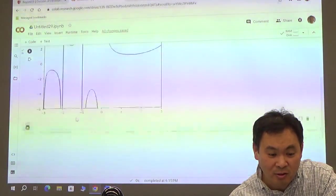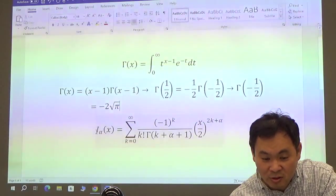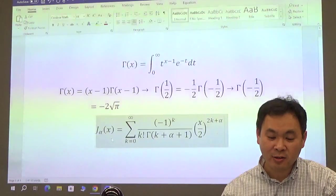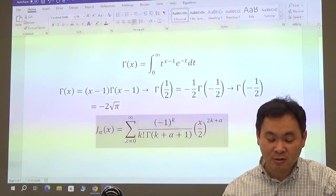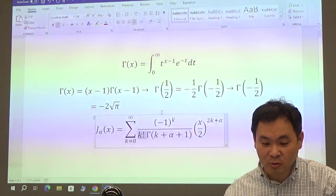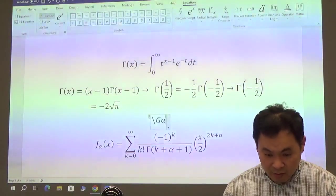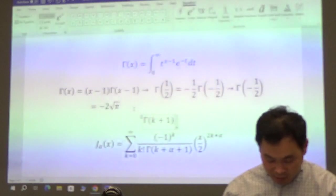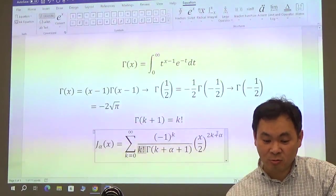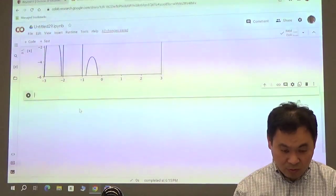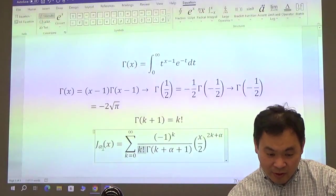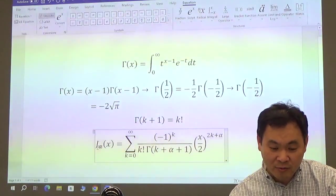So once we have some idea of how gamma function looks like, let's now draw the graph of the Bessel function. This is the Bessel function of the first kind. Let's only draw a Bessel function of the first kind. The thing is, Python doesn't have factorials, but because we know that gamma of k+1 equals k factorial, something that we proved last time, I'm going to replace this by gamma of k+1, and I'll need to make a function for this one.